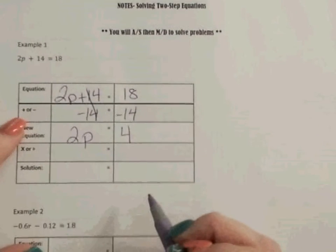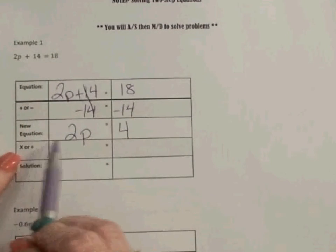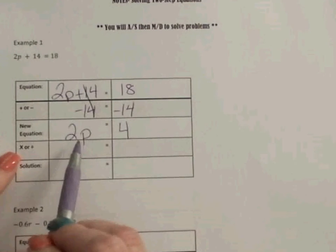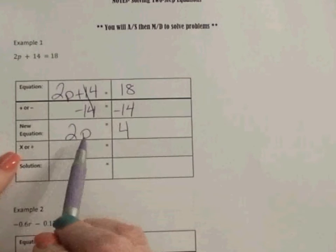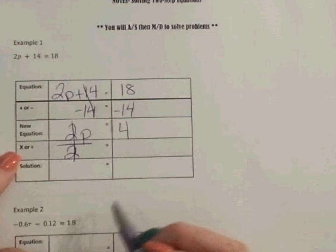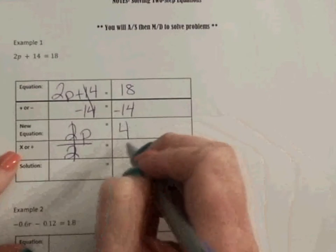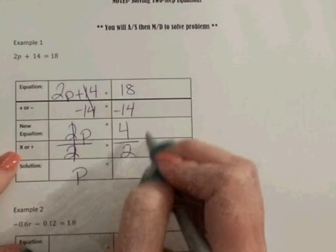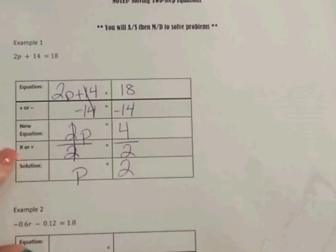So now I need to multiply or divide. Currently, the 2 and the p are being multiplied. If they are pushed together, that means they're being multiplied. So the opposite of multiplication is division. I'm going to divide it by whatever is connected to the p. And divide that side by 2. So this leaves me with p equals 4 divided by 2 is 2. So p equals 2.